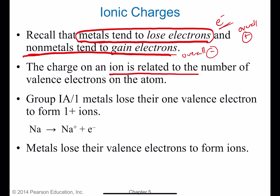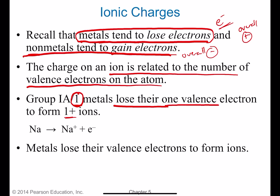The charge on an ion is related to the number of valence electrons on the atom. Group one metals — the alkali metals — have just a single valence electron, and they lose that one valence electron to become a positive one ion. So sodium can lose a single electron and end up with a one plus positive charge. That is the ion, while the original is the neutral atom. Metals lose their valence electrons to form ions when they participate in chemical bonding; the number lost depends on how many valence electrons they had to begin with.